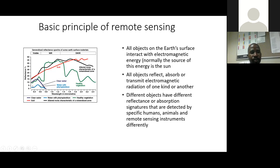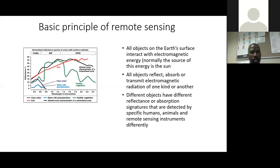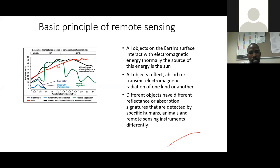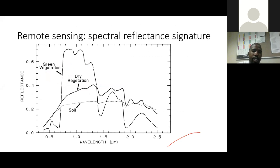And then water — clear water — it reflects highly within the visible region, and then it absorbs almost everything after the visible region, being in the near infrared and the shortwave infrared. The water that is not clear, the contaminated water, the water with vital plant matter on it, we see it doesn't reflect as much energy as clear water. So there are variations in how they react. Different objects react to different energy depending on their composition or their makeup.